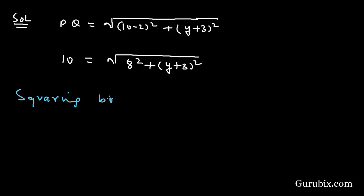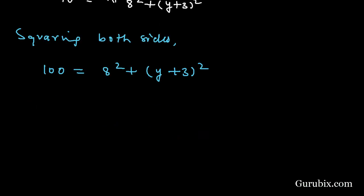Squaring both sides, then it will be 10 square means 100, and here we have 8 square plus (Y plus 3) square. If we further solve this value, this equals 100 minus 64, because 8 square equals 64.